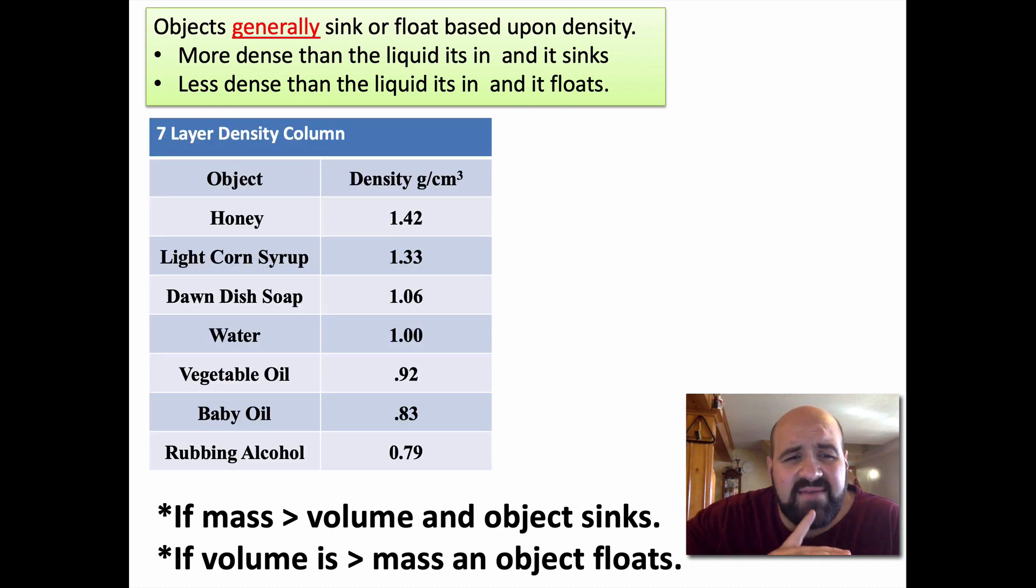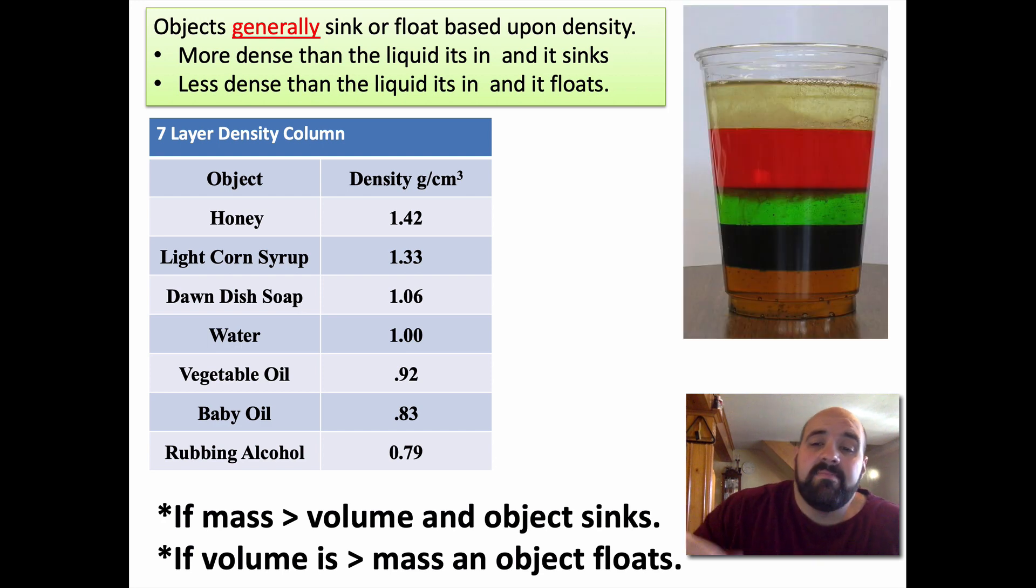Objects will sink or float based on density. This brick, as you could guess, if I place it in a big tub of water, it's going to sink right to the bottom because it's very, very dense. It's denser than water. This styrofoam is very light. It has a very low density. It's less dense than water. So styrofoam will float in water. In fact, if you think of those boogie boards and things like that, they're usually made of some sort of foam. So when an object is more dense than the liquid it's in, it sinks. If it's less dense, it will float. And here's seven different common liquids at home. I would normally do this in class, but we can't this year because of COVID. But anyway, these liquids have different density values. You could make a density column.